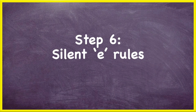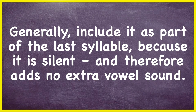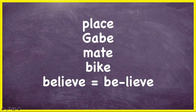Step six: the silent E rules. The silent E is the E at the end of a word that does not make a vowel sound. Because it's silent, it's not a vowel sound, and because it's not a vowel sound, it's not a syllable. The general rule is to include it as part of the last syllable because it is silent and therefore adds no extra vowel sound. For example: place, Gabe, mate, bike, believe. We don't say 'place-uh,' 'Gabe-uh,' 'mate-uh' — we say place, Gabe, mate, bike. Those are all one syllable, and 'believe' is two syllables.